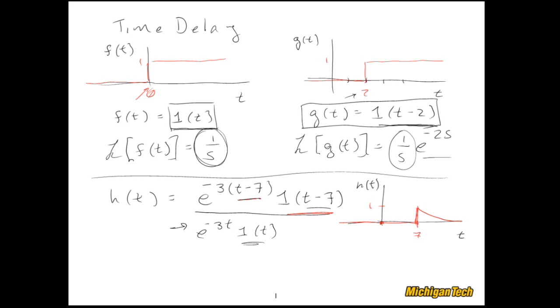1(t), and I don't really need to keep multiplying by that in the undelayed version because when I take the Laplace transform it'll go from 0 to infinity, but it's nice to write that just to remind ourselves of what is happening with that function.